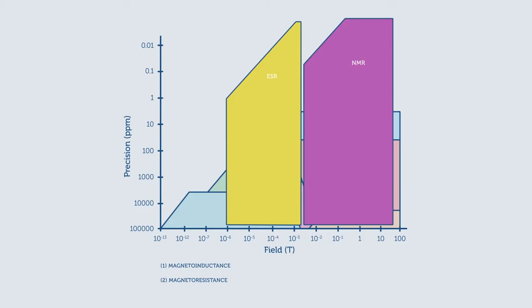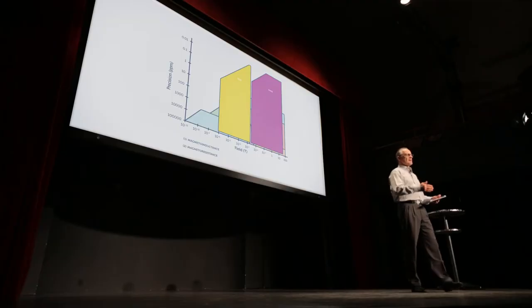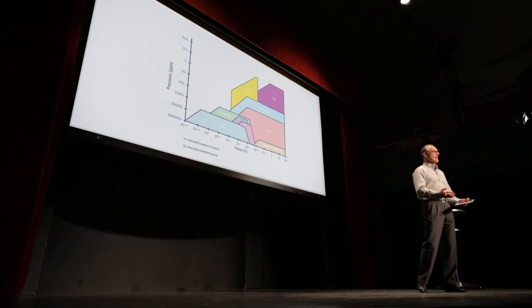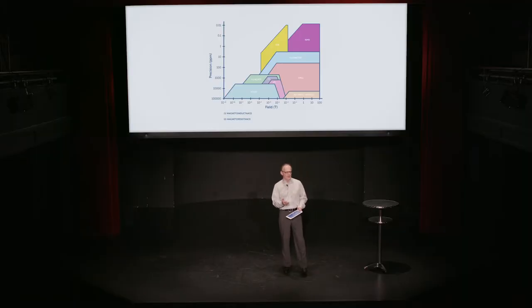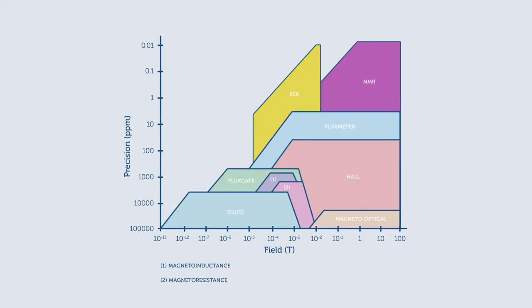What's more, NMR provides an absolute measurement, meaning that it doesn't change as a function of temperature, the orientation of the sensor, or the age of the sensor. It is, in many ways, the perfect magnetometer. For these very reasons, NMR magnetometers are often considered the gold standard of magnetometers. When we're calibrating other magnetometers, we often use NMR magnetometer as the reference instrument.